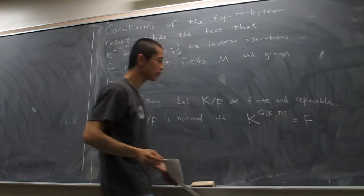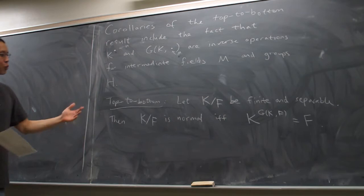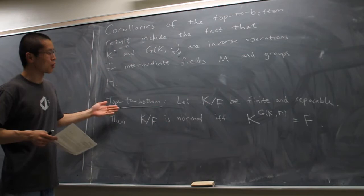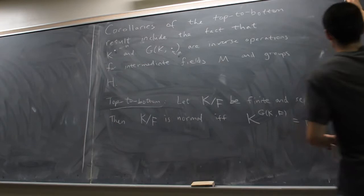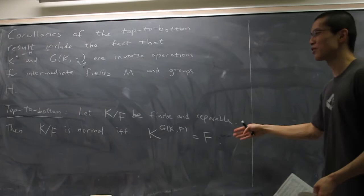Here we only say that K and F are inverse; we say nothing about their intermediate fields and intermediate groups. But what I'm saying is this single result easily implies the same result for intermediate fields M and H. We will prove that right away. This is to better illuminate why this is a more fundamental result. So I think it's worthwhile to prove the corollary first before seeing why we need to prove this.